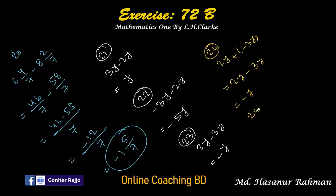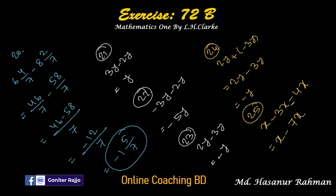Number 25 says x minus 3x minus 4x. Here minus into minus 4x becomes plus 4x. The signs of 3x and 4x are both negative so we add: 3x plus 4x is 7x. Then x minus 7x is minus 6x.